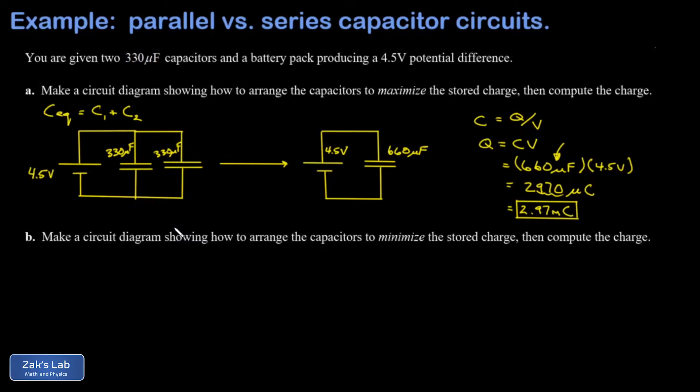In part B, we want to make a circuit diagram showing how to arrange these capacitors to minimize the stored charge. What we're going to do is take a series combination because in a series combination, I end up with one over the equivalent capacitance is one over C1 plus one over C2. And this is guaranteed to produce an equivalent capacitance that's less than either one of the individual capacitors.